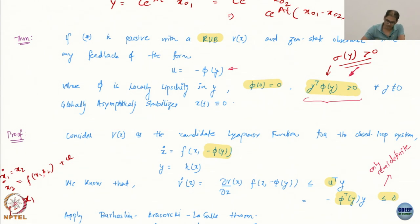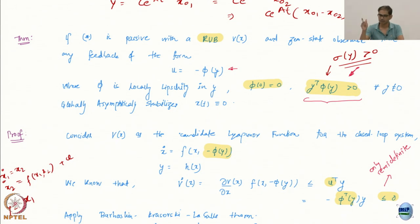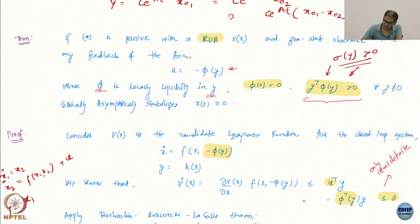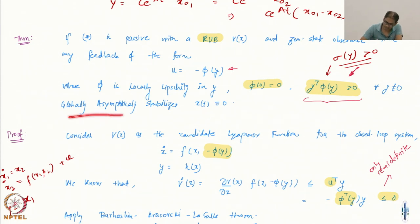What does it say? It says that if the system is passive with a radially unbounded V(x) — no longer just positive semi-definite V — we require V to be radially unbounded because we want to use the Lyapunov theorem. So if the system is passive with a radially unbounded storage function V(x) and zero-state observable, then any feedback of this form, where φ is locally Lipschitz in y, φ(0)=0, and y^T φ(y) is strictly positive for all nonzero y, this globally asymptotically stabilizes the zero state.